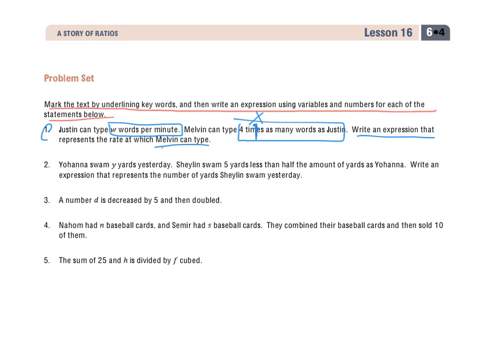So, the first thing I want to do is identify a couple things in here. I know that Justin is going to equal W, because it says Justin can type W words per minute. So, that's Justin's typing. Melvin can type four times as many words as Justin. So, I know Melvin is going to be four times what Justin can do. If Justin is W, then Melvin is four times W. So, my expression here, because it says expression, so I'm not going to have an equal sign to solve this, is just 4W, which means four times W. So, in order to find Melvin's, how fast he can type at which rate, I'm going to have to multiply whatever Justin is times four.